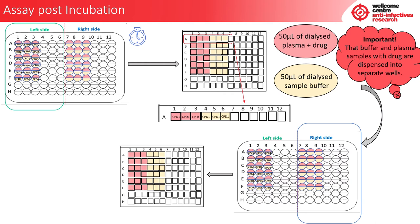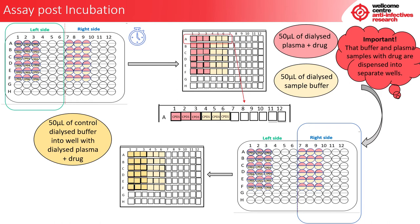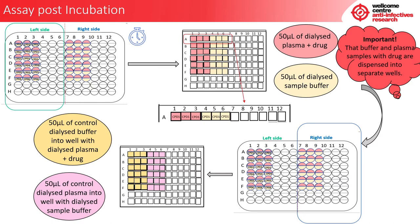Now we are going to look at the right-hand control side of the dialysis block. Into our 96-well 2 ml block, which already contains our dialyzed plasma and drug samples and our dialyzed buffer samples, we are now going to add 50 microlitres of control dialyzed buffer into the wells with the dialyzed plasma and drug (columns 1 to 3). We are then going to add 50 microlitres of control dialyzed plasma into the wells with the dialyzed buffer samples (columns 4 to 6). This is carried out to normalise the samples and reduce any ion suppression that may be seen on the mass spectrometer.